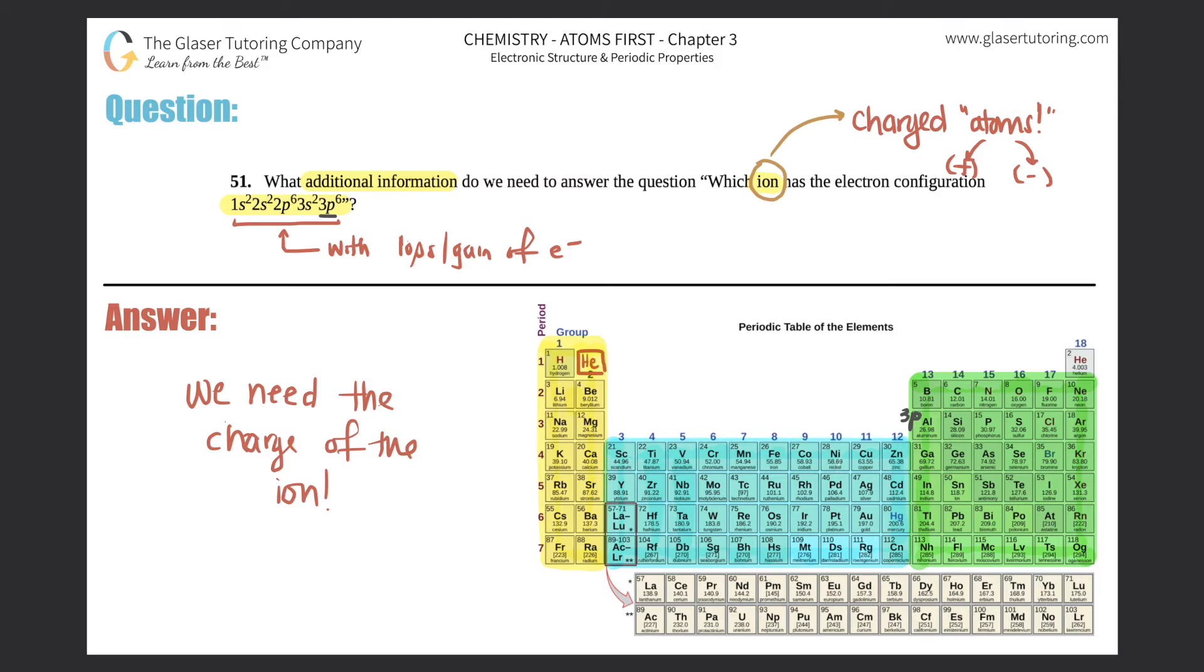Because we don't know whether that ion gained electrons, we don't know if it lost electrons, if it gained one, if it gained two, if it lost one, if it lost two. That's the additional information we need. We know that it's argon-like, but we don't know who it was before.